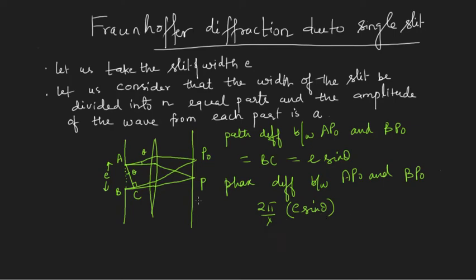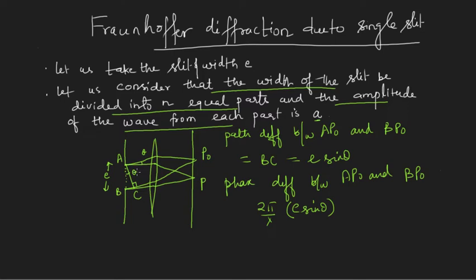According to Huygens' principle, these points will act as sources for secondary wavelets, and there will be an infinite number of such points. For simplicity of calculation, let us consider the slit width divided into n equal parts. Each part will produce a wave of amplitude 'a.' So I can imagine the slit width AB divided into n parts, and each point will give a secondary wave with amplitude 'a.'